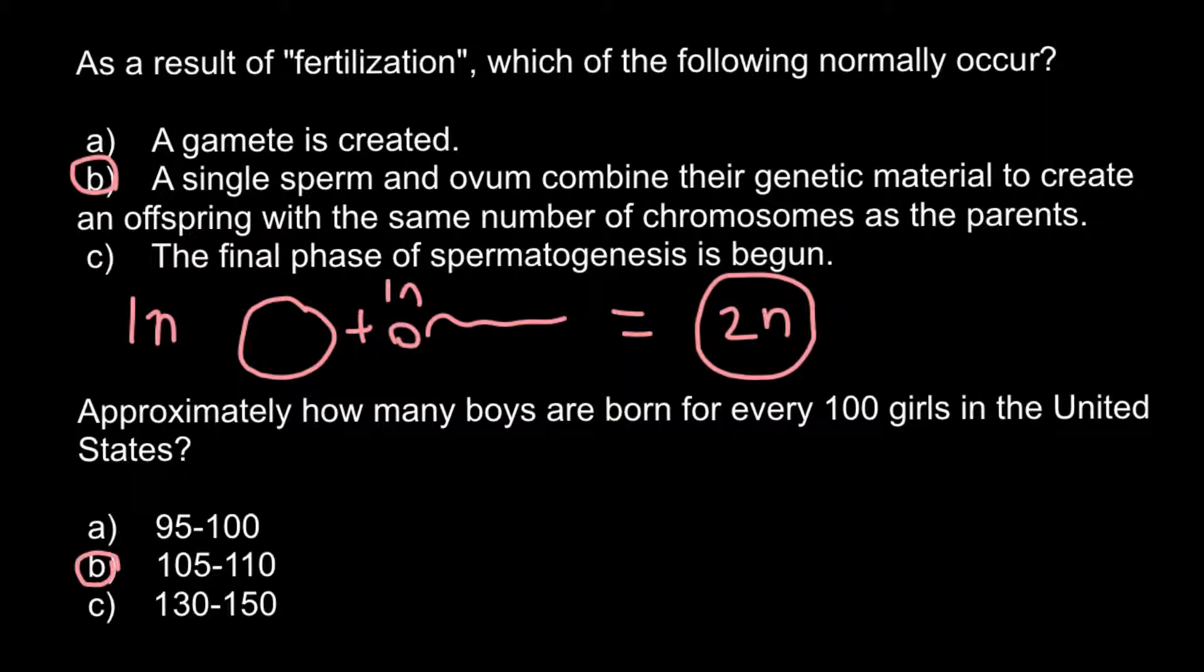Almost in any nation we have more boys born than girls, approximately 105 boys per 100 girls. The explanation is: Imagine that this is an X chromosome. Females have two X chromosomes.